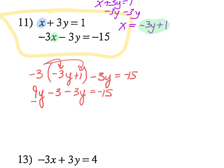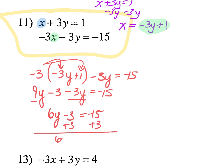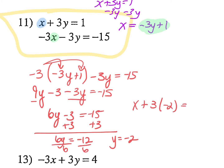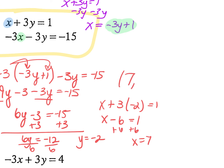Combine like terms: 9y minus 3y gives 6y. So 6y minus 3 equals negative 15. Add 3 to both sides: 6y equals negative 12. Divide by 6 and y equals negative 2. Now to find x, I plug it back in. I'm going to use the top equation: x plus 3 times negative 2 equals 1. x minus 6 equals 1. Add 6 to both sides: x equals 7. So I write it as an ordered pair of 7 comma negative 2.